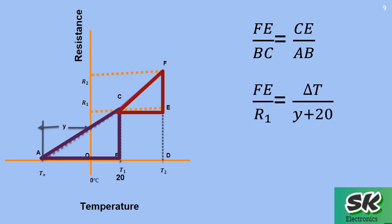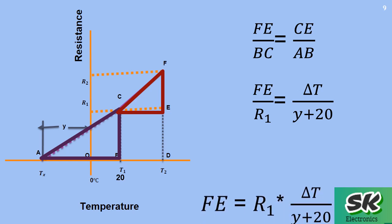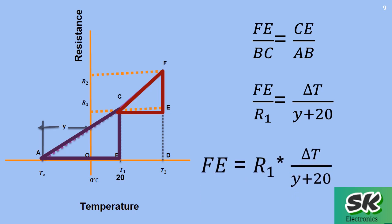Here, delta t is the difference between t and 20 degrees Celsius. Therefore, the quantity 1 over (Y + 20) is the temperature coefficient of resistance at 20 degrees Celsius — the proportion by which the resistance changes per degree of change in temperature from 20 degrees Celsius.